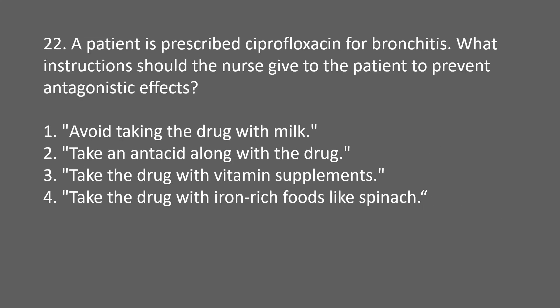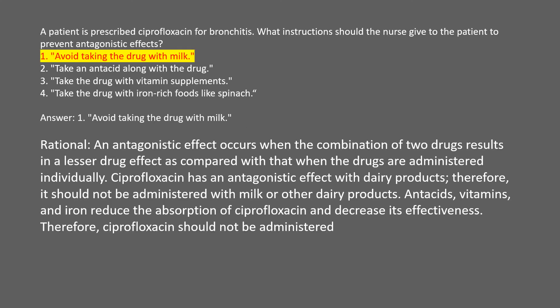A patient is prescribed ciprofloxacin for bronchitis. What instructions should the nurse give to prevent antagonistic effects? 1. Avoid taking the drug with milk. 2. Take an antacid along with the drug. 3. Take the drug with vitamin supplements. 4. Take the drug with iron-rich foods like spinach. Answer: 1. Avoid taking the drug with milk. Rational: ciprofloxacin has an antagonistic effect with dairy products. Antacids, vitamins, and iron reduce the absorption of ciprofloxacin and decrease its effectiveness.